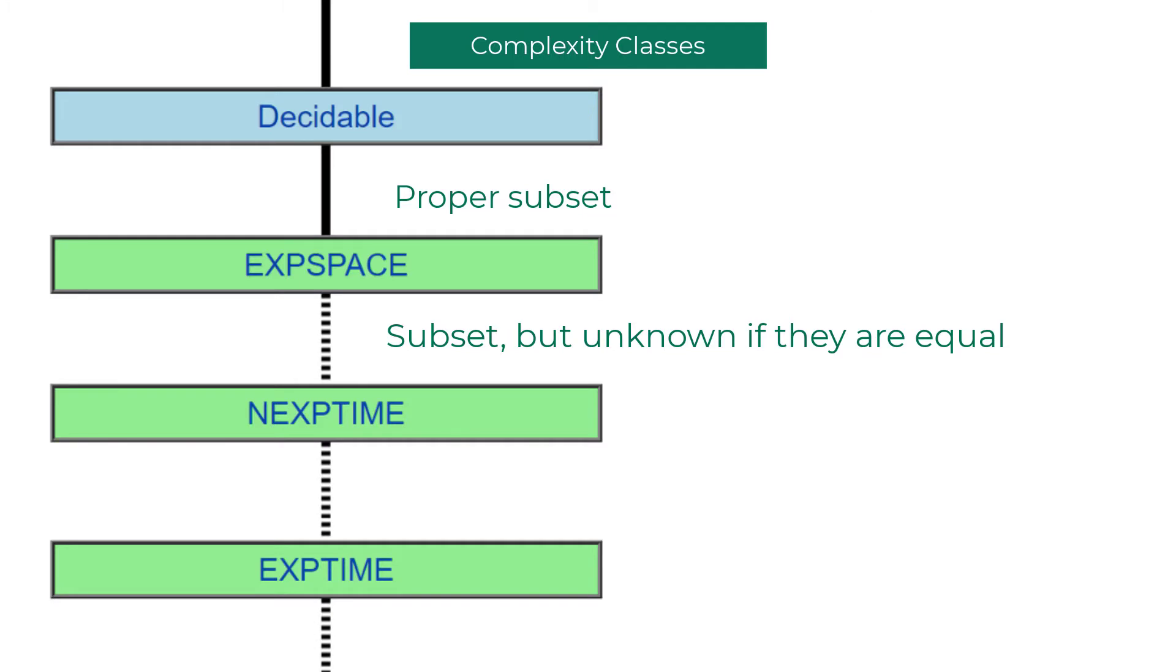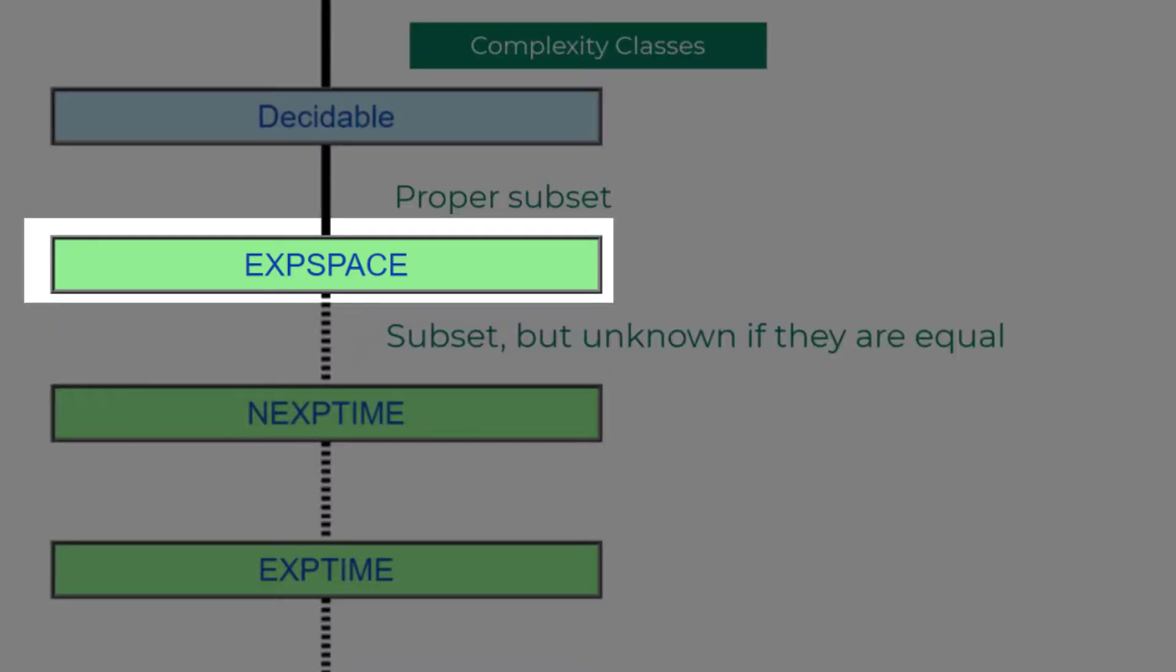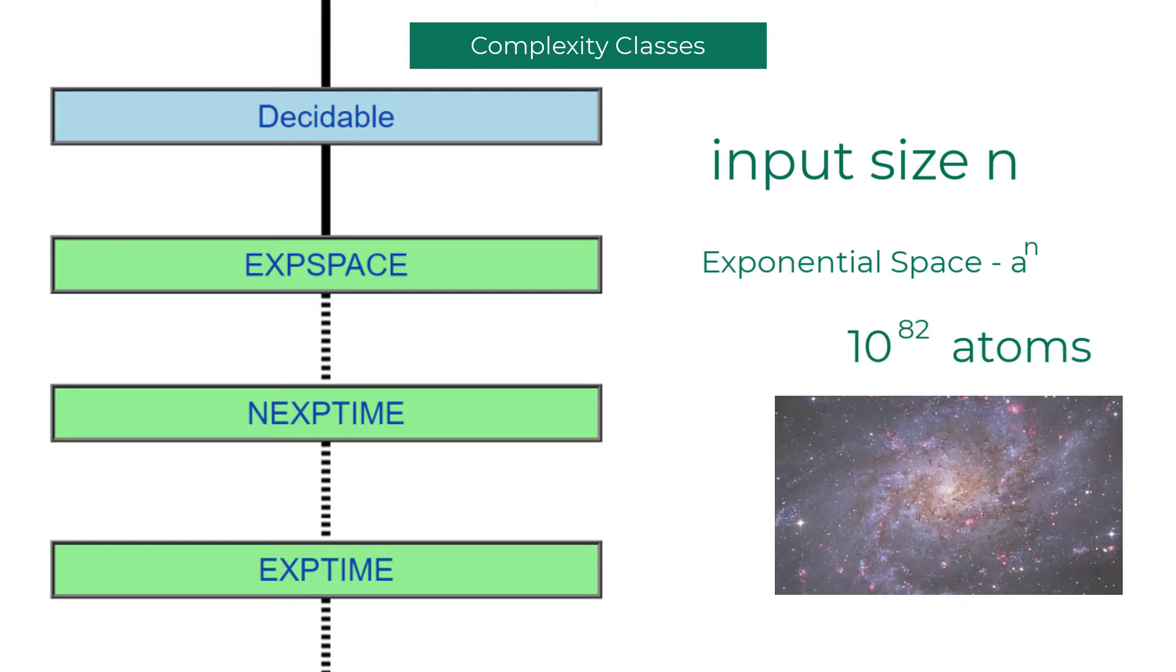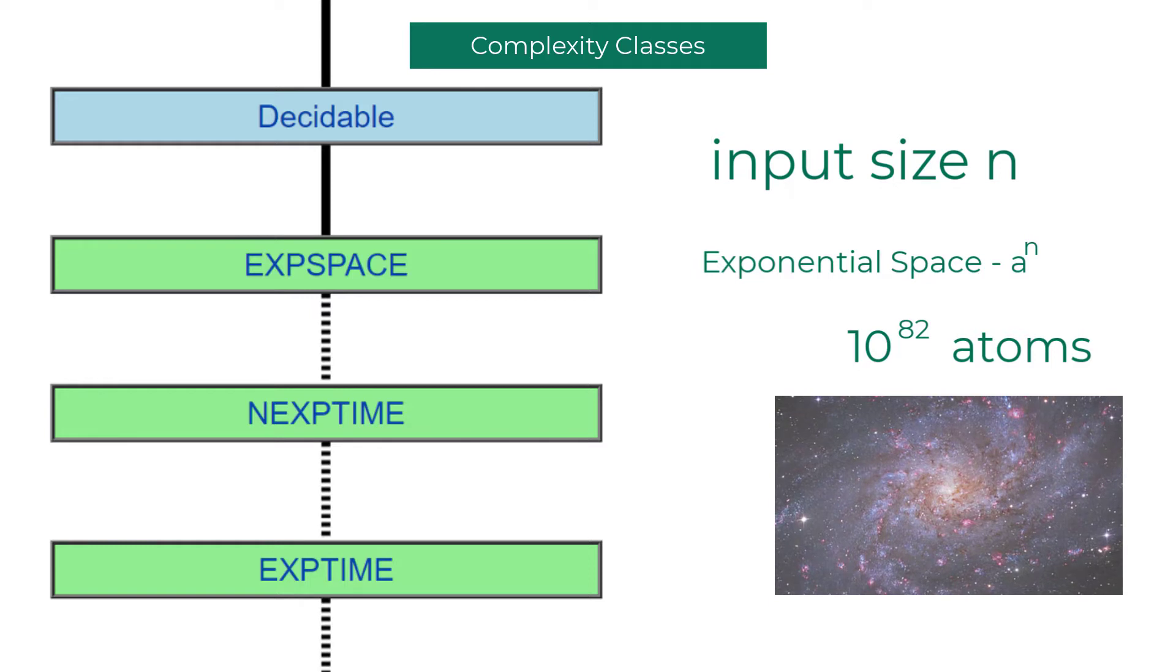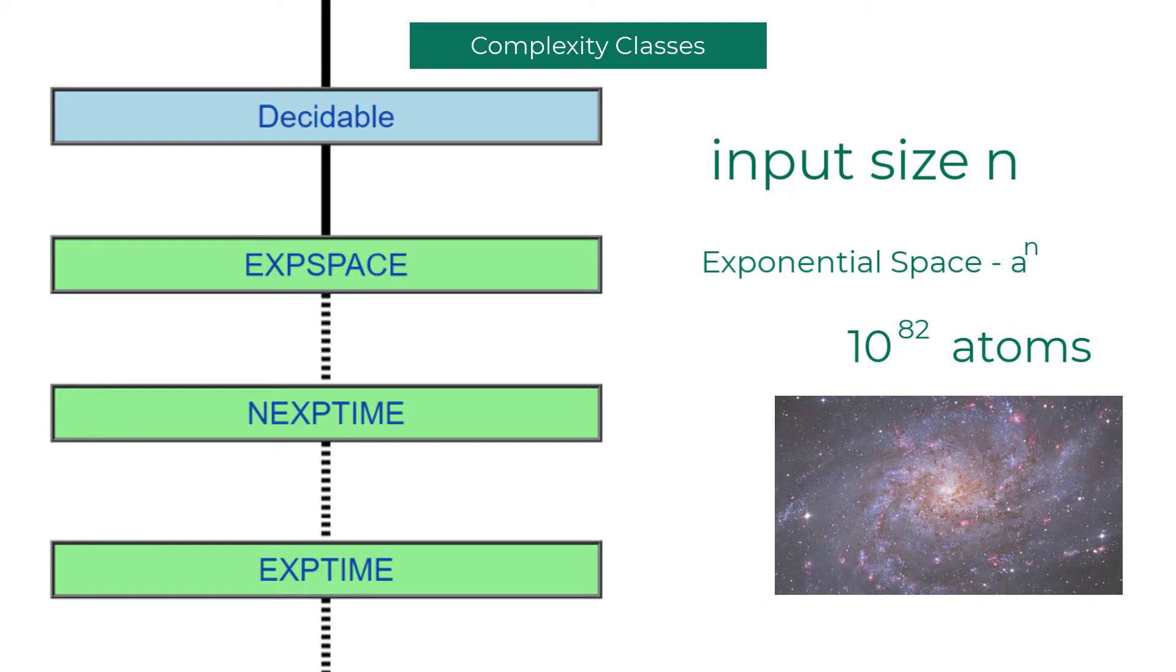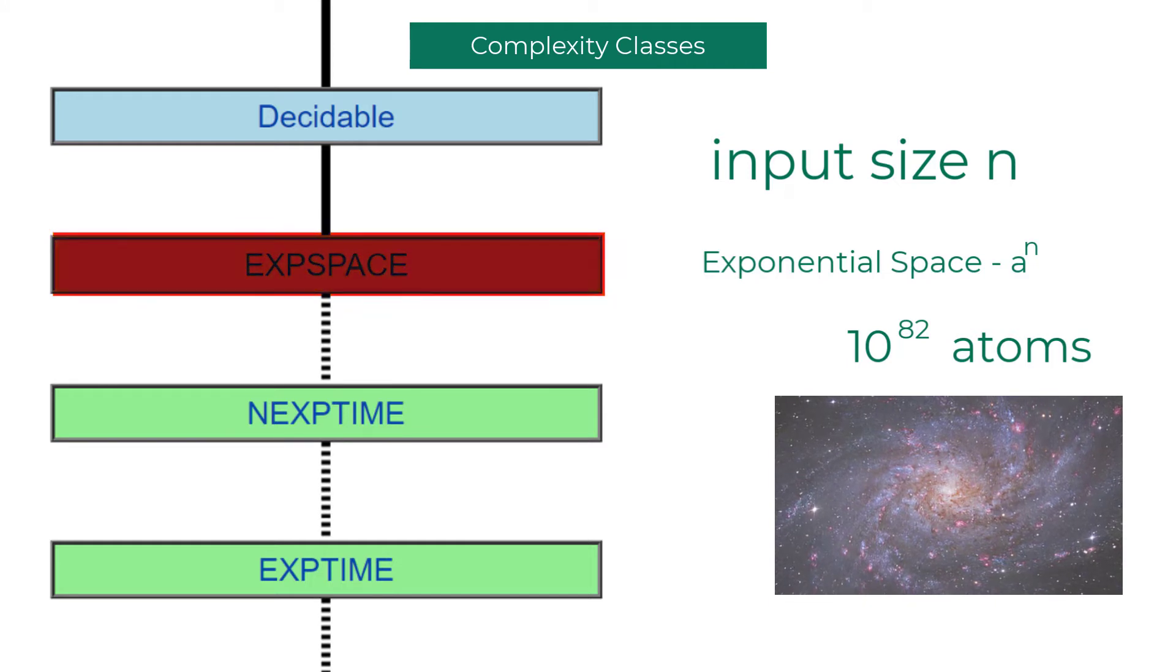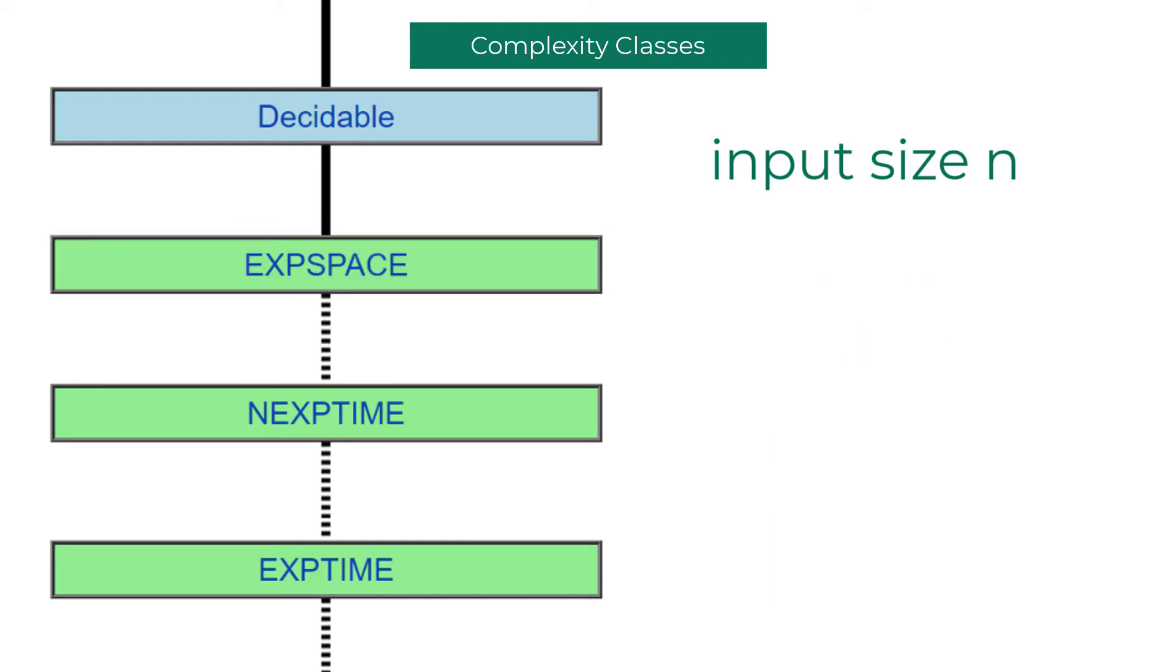Now let's look at exponential space requirement. For an input size of n, if your program requires that you have exponential space - usually a constant with exponent as n - we run into trouble. If you look at it, the universe has 10 to the power 82 atoms. Even if you use every individual atom as a storage bit, you won't be able to solve it when n is greater than 82.